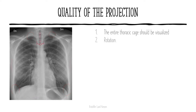Then we have to assess if we have the correct rotation. The x-ray should be taken as straight on as possible. To assess the rotation, you can look at the spinous processes of the vertebrae. You can also look at the spinous process that lies approximately in the middle of the two claviculi — it should be approximately the same distance towards each clavicle. If it goes more towards one side, it can be a sign of scoliosis or that we have the wrong rotation.